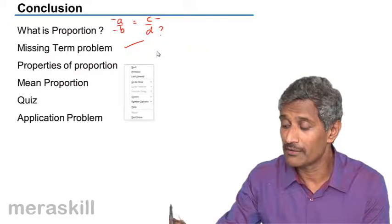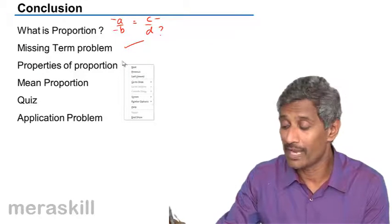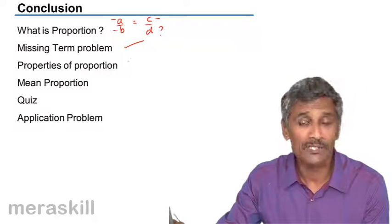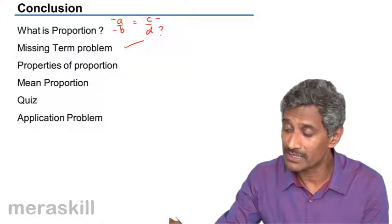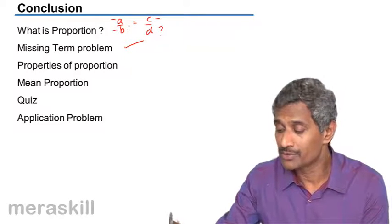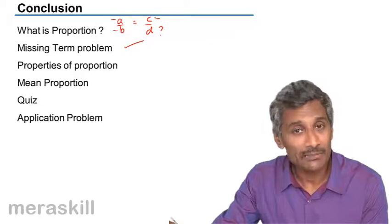Properties of proportion. Quickly, if we list these properties, we start with a cross multiplication property that is if a by b is c by d, ad is going to be equal to bc. Then we had invertendo rule that is b by a will be d by c.